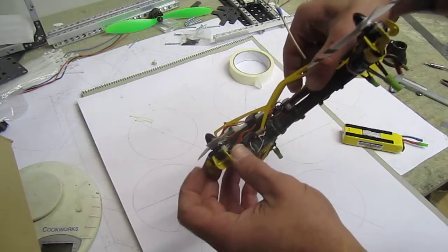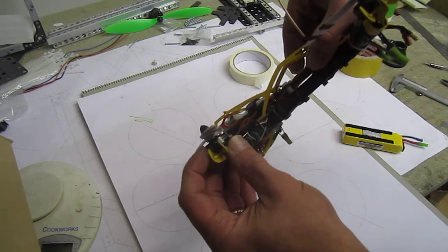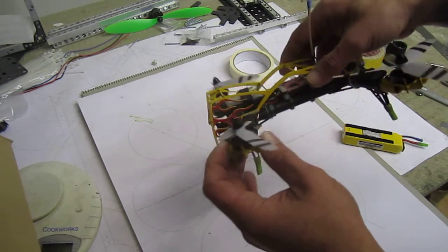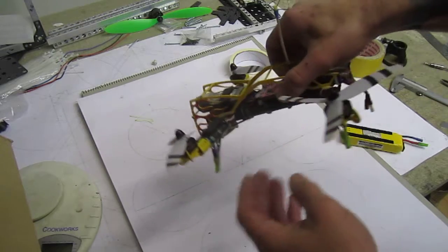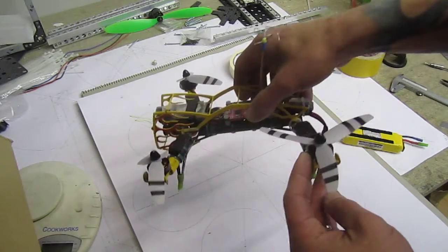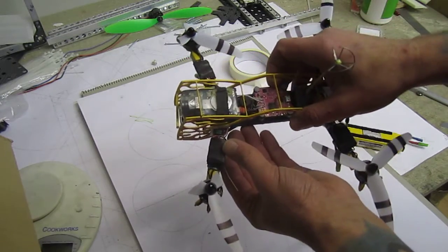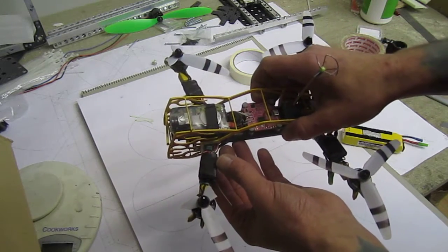I have ZMR motors, RCX 1804 2400kV. Now these motors are a little bit fussy. They don't work with all ESCs. ESCs are Hobby King F-series 10 amp ESCs, flashed with the very latest Simon K software.